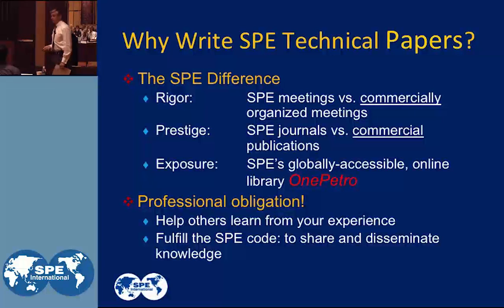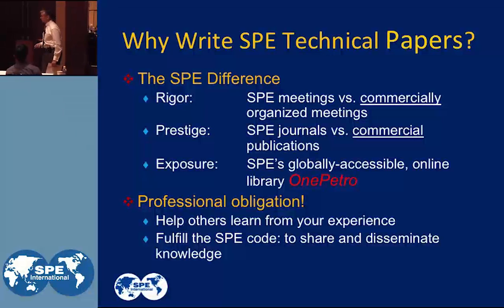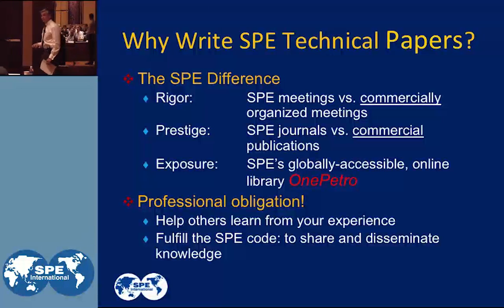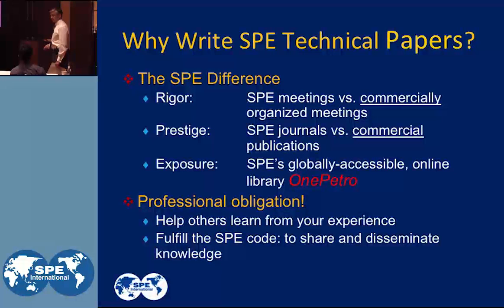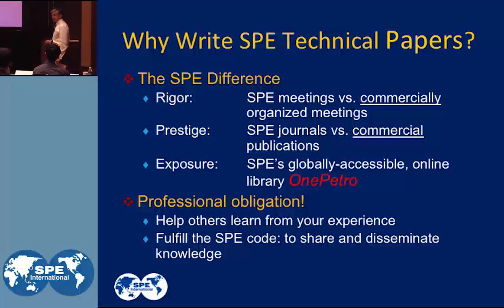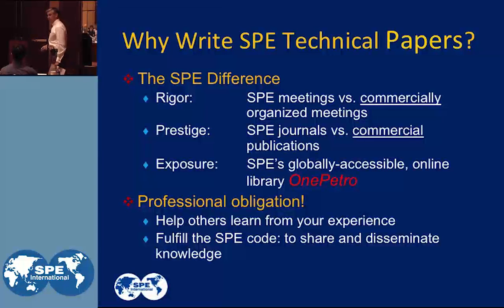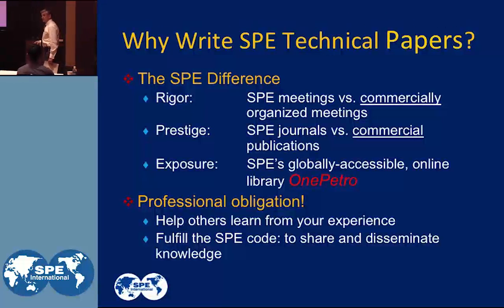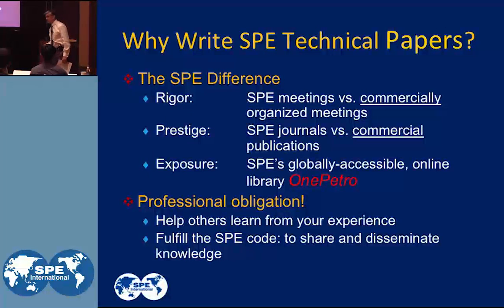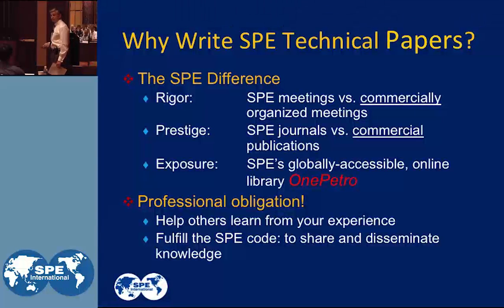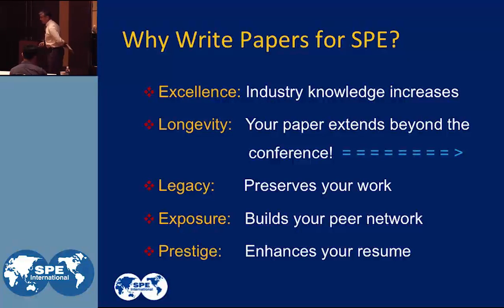Why write papers for SPE? There's a difference — you write for a company-sponsored conference with rigor because you're presenting to your peers. An SPE meeting is a peer meeting versus commercial meetings. Papers go into SPE journals versus commercial publications. It gets a lot of exposure through OnePetro, which is globally accessible. And it's a professional obligation — once you become an engineer, you're professionally obliged to share your results with the public to help others learn from your experience and fulfill the SPE code.